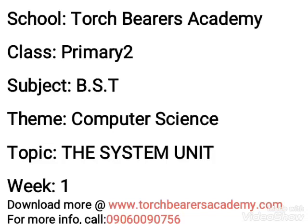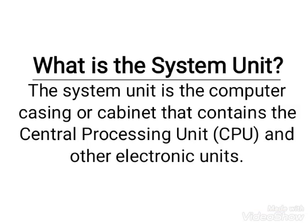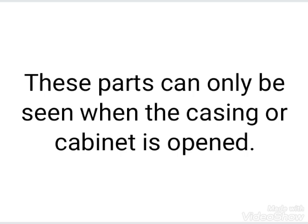We are beginning a new topic this term in computer science, and our first topic for this term is the system unit. The system unit is the computer casing or cabinet that contains the central processing unit, which is also known as the brain of the computer, and other electronic units that can only be seen when the case or cabinet is open.